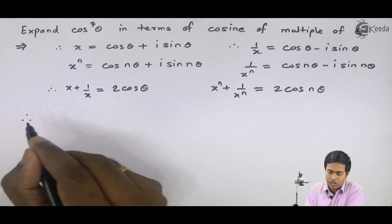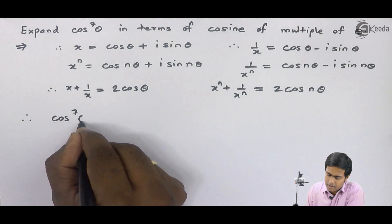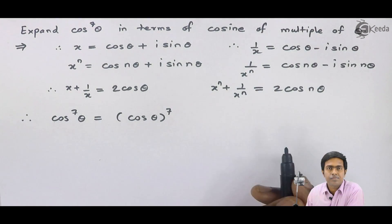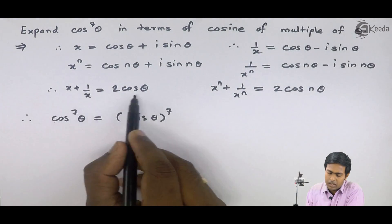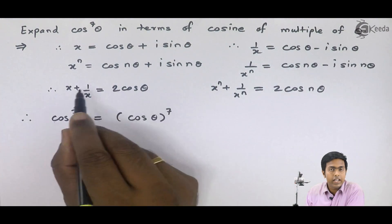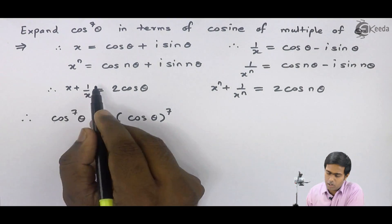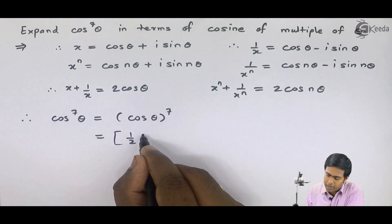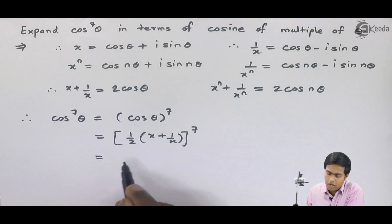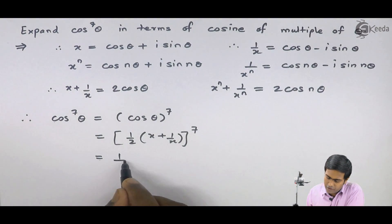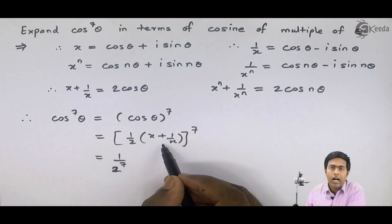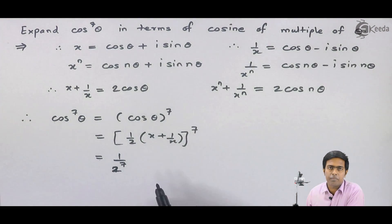Now let us start with the given question. The given question is cos raised to 7 theta, which we can write as (cos theta) whole raised to 7. From the relation x plus 1 upon x equal to 2 cos theta, we can find cos theta. The 2 will go to the left hand side, giving us 1/2 times (x plus 1 upon x), and I will substitute that value in the bracket. We have to find the 7th power of this term. Since 1/2 is a constant, I will find the 7th power separately, giving 1 over 2 raised to 7, and apply the binomial theorem for the remaining part.